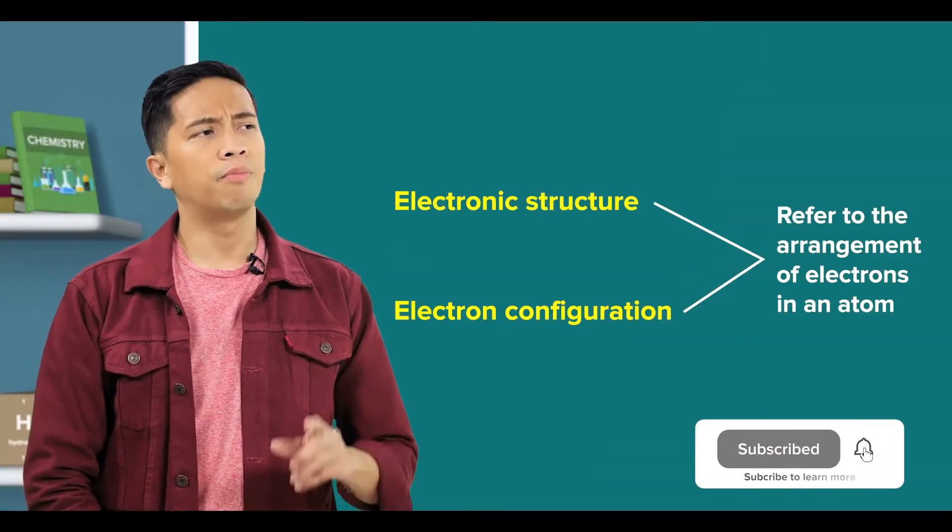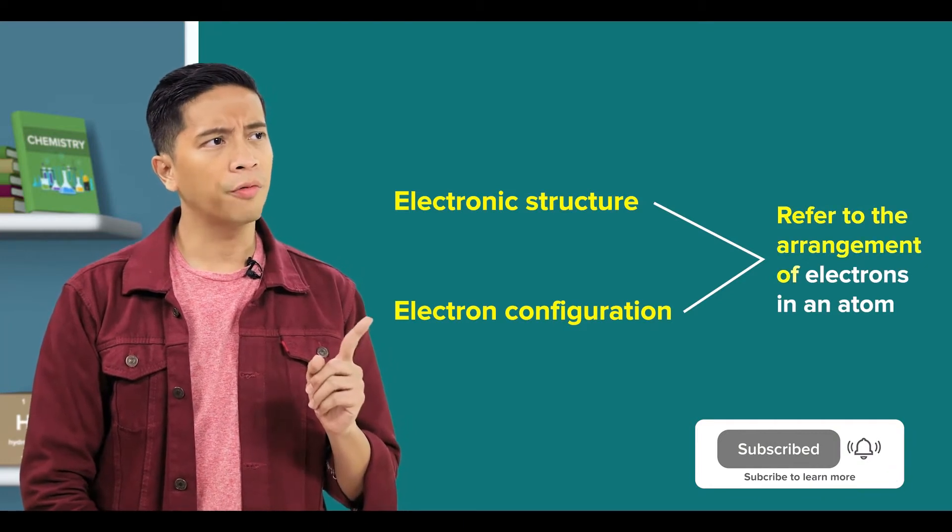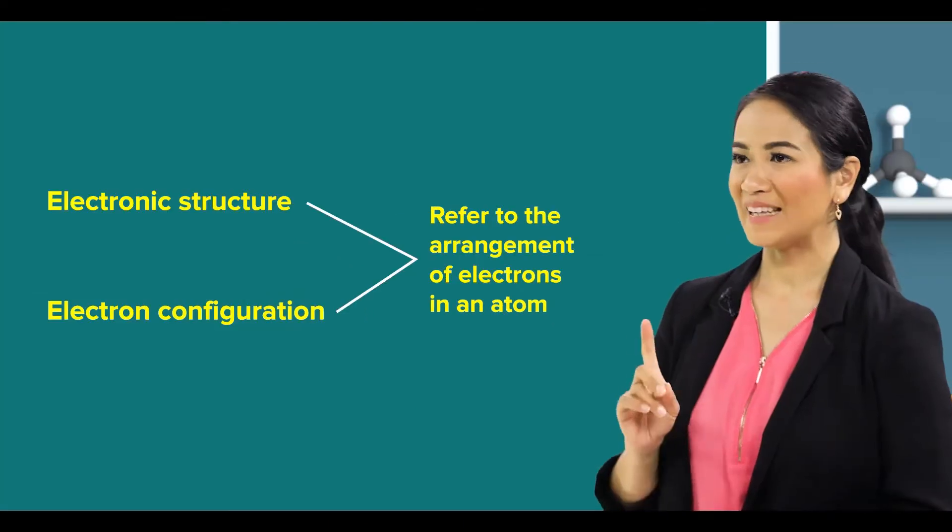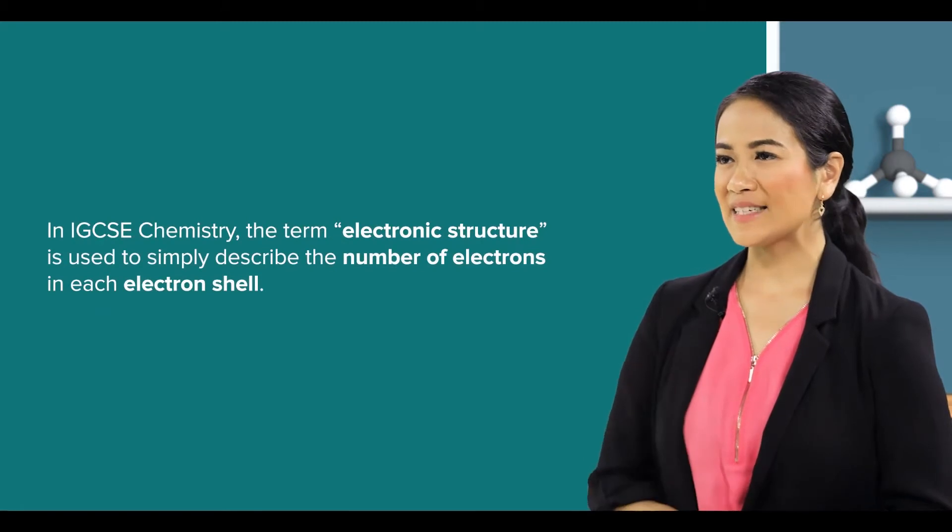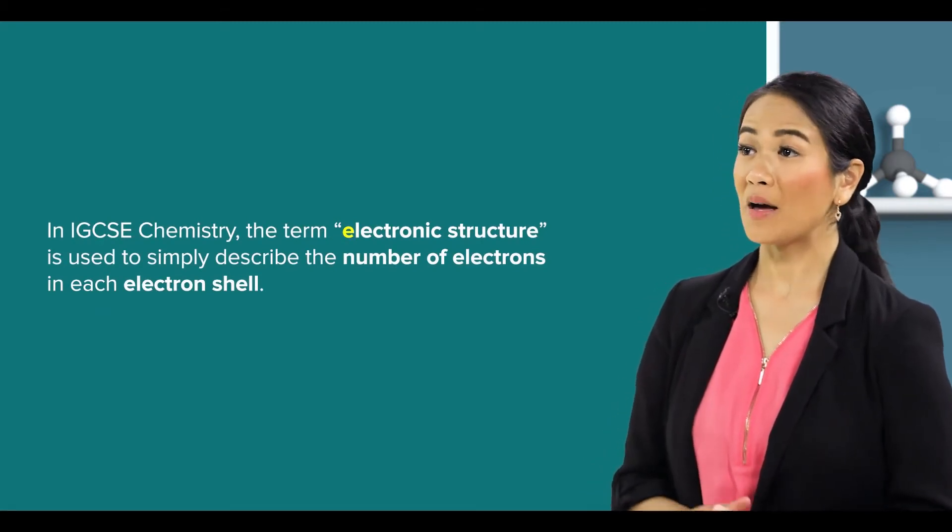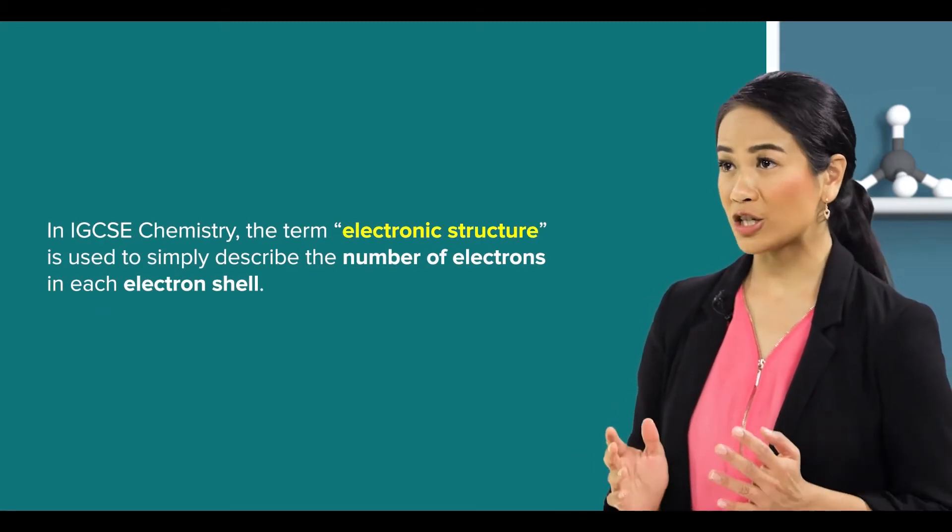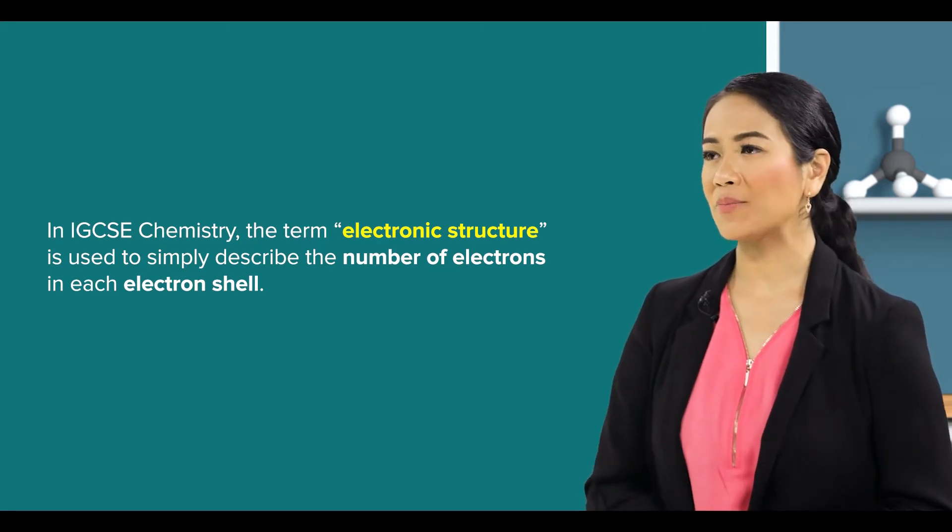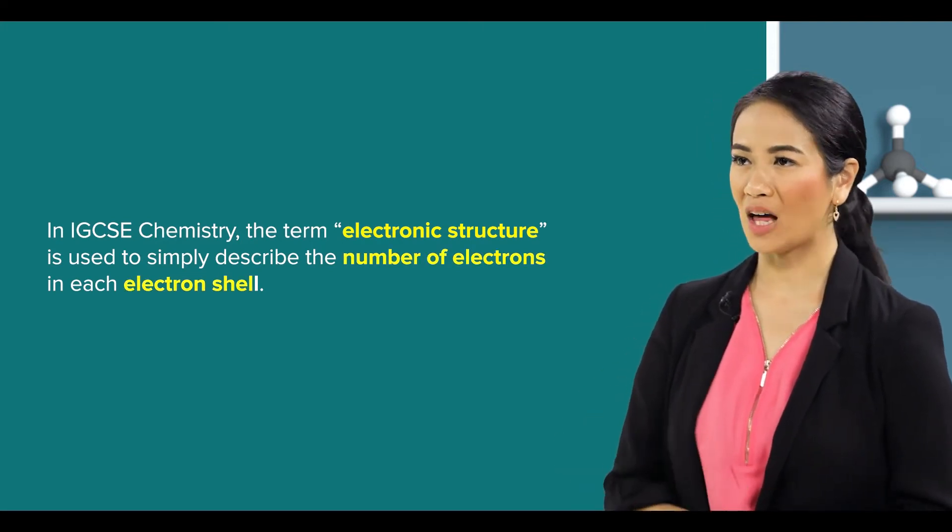Okay, they both refer to the arrangement of electrons in an atom. Yes, in IGCSE chemistry, the term electronic structure is used to simply describe the number of electrons in each electron shell.